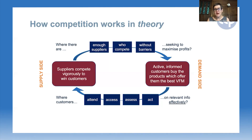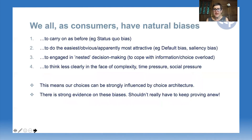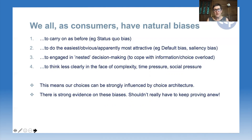Now I want to think about why the demand side may not work as effectively as you might think. A key reason is that we as consumers all have natural biases. The most important ones to highlight in the context of abuse cases are our tendency — our bias to carry on as before, even when there may be better options on the table. That's status quo bias: a bias to do the easiest, the most obvious, apparently the most attractive thing, even if it isn't actually the best thing. The sorts of biases relevant there are default bias and saliency bias.